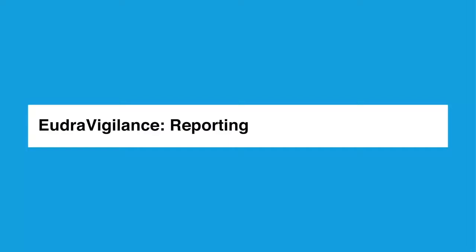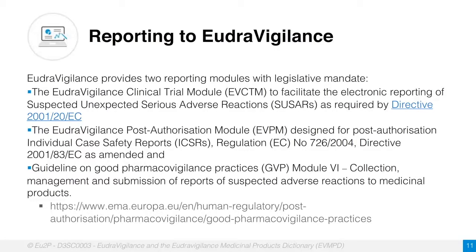EudraVigilance provides two reporting modules with a legislative mandate. The EudraVigilance clinical trial module, EVCTM, facilitates the electronic reporting of suspected, unexpected, serious adverse reactions — so-called SUSARs — as required by Directive 2001/20/EC. The EudraVigilance post-authorisation module, EVPM, is designed for post-authorisation capture of individual case safety reports, and Regulation 726/2004 and Directive 2001/83/EC apply.